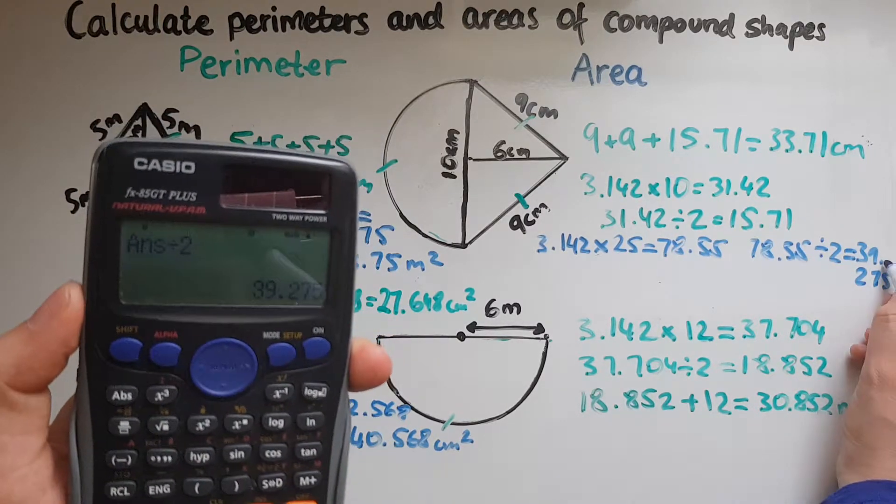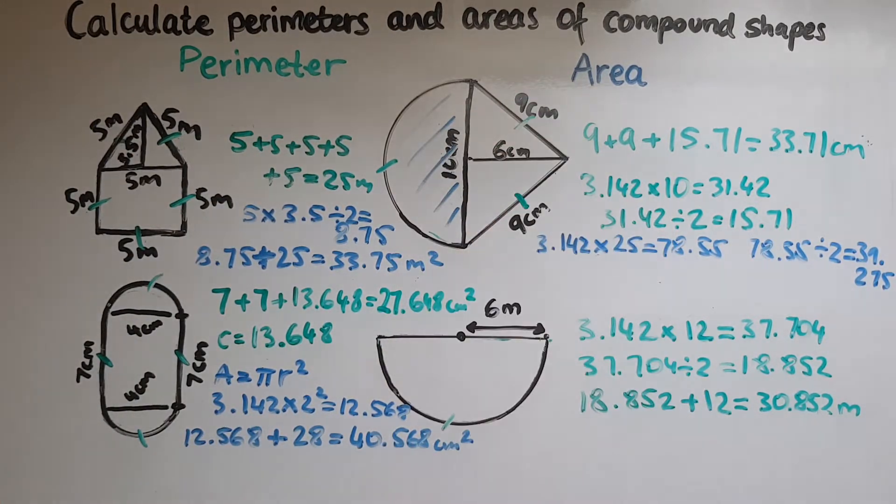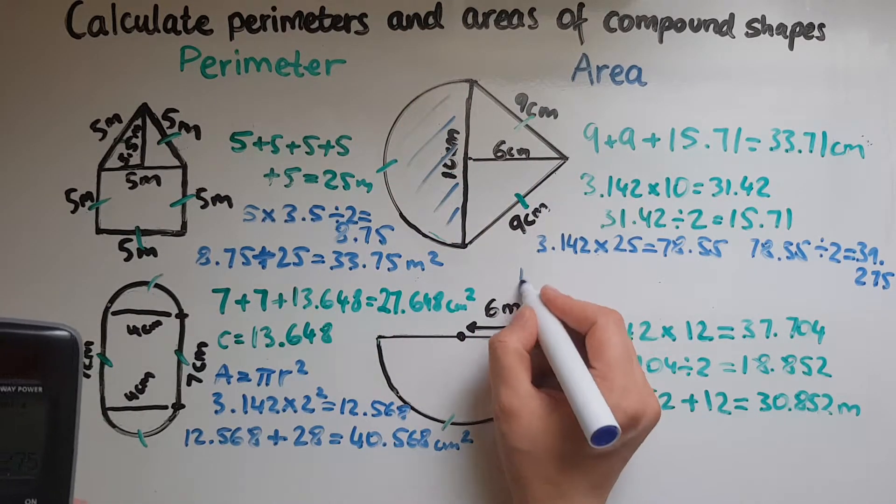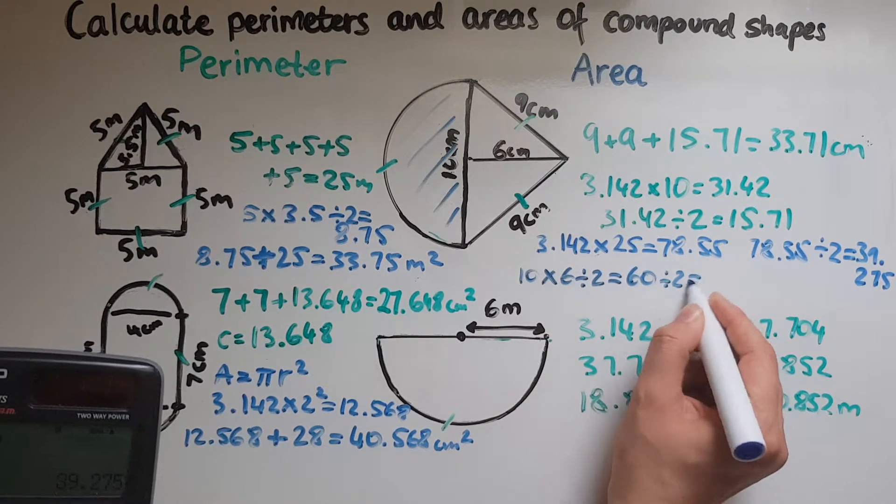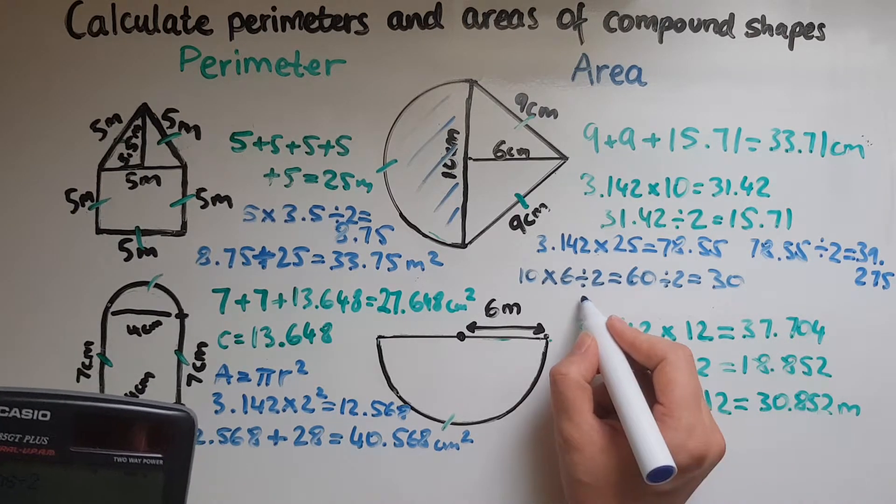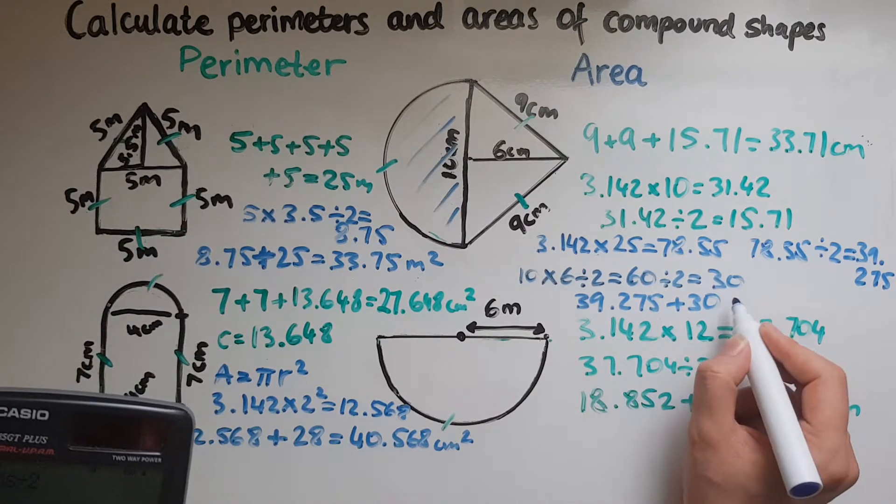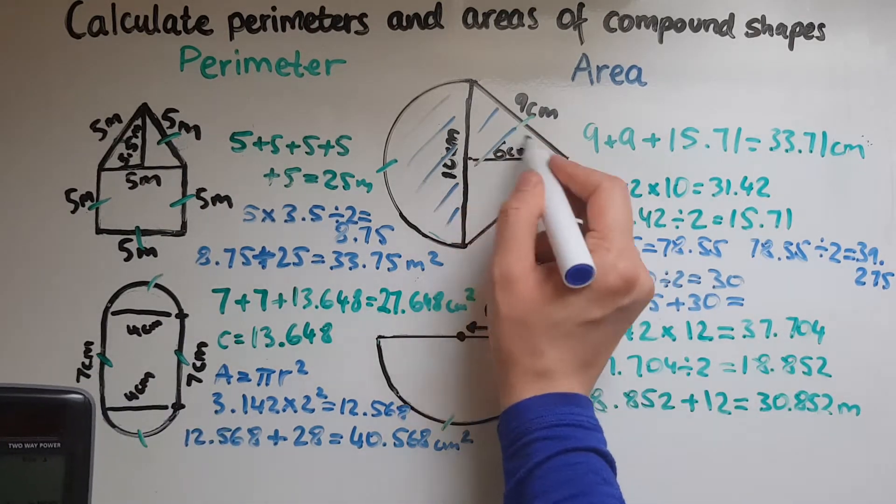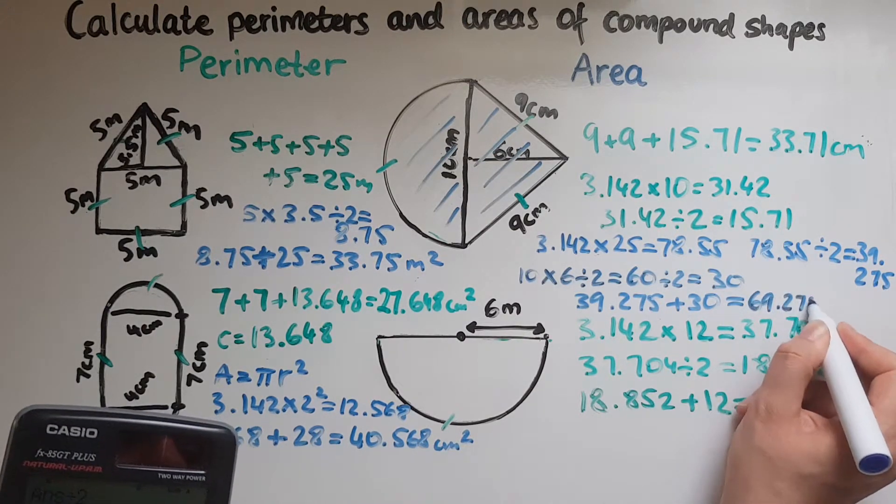That is thirty nine point two seven five. Now we've got to calculate the area of the triangle which is base times height divided by two. So base is ten, height is six. Ten times six divided by two, that is sixty, gives us thirty. We'll add thirty nine point two seven five plus the thirty.